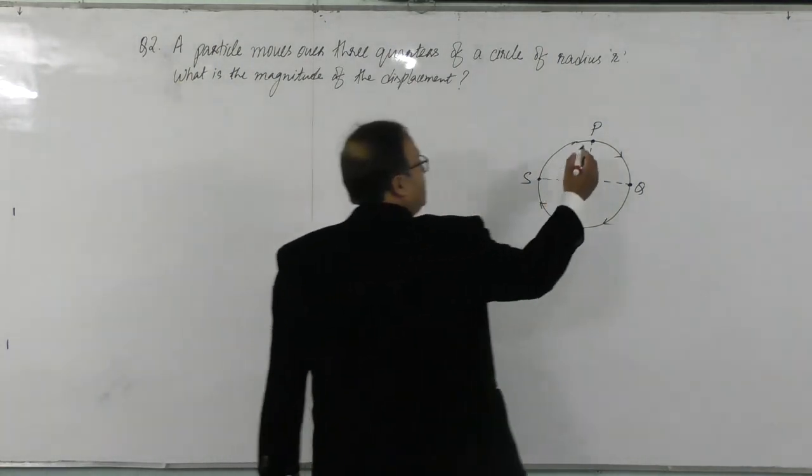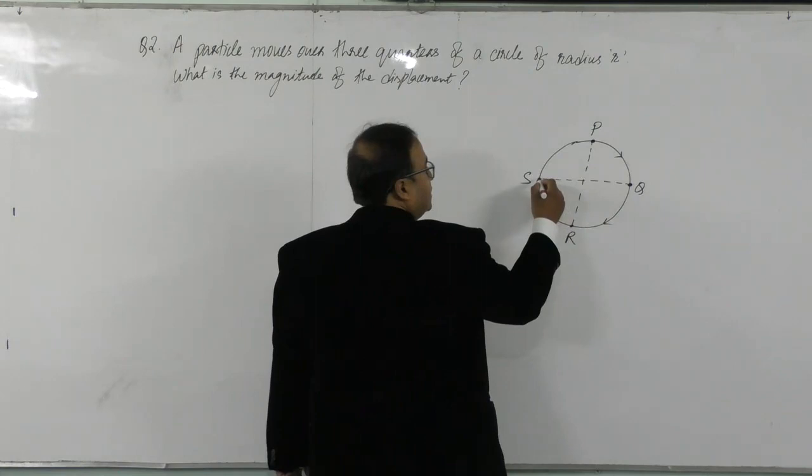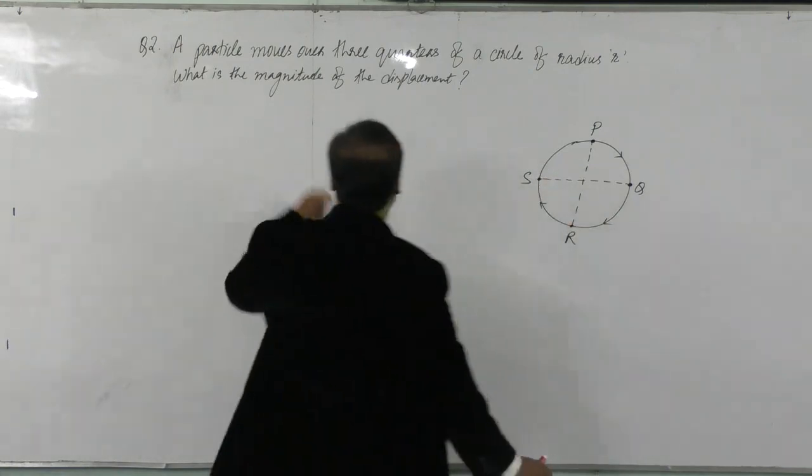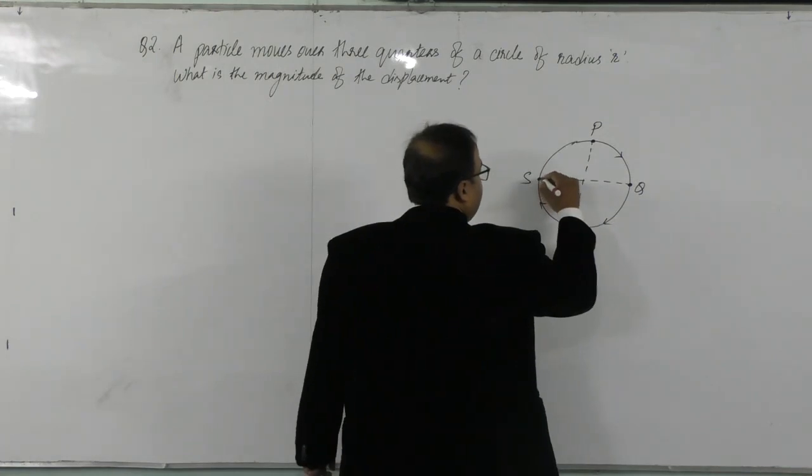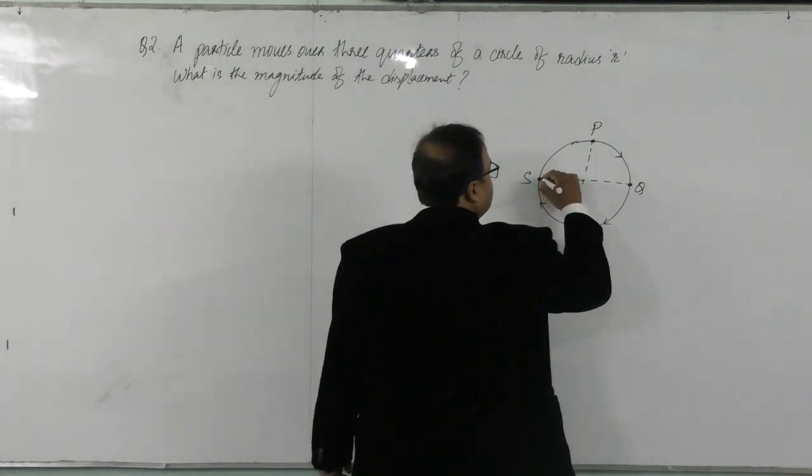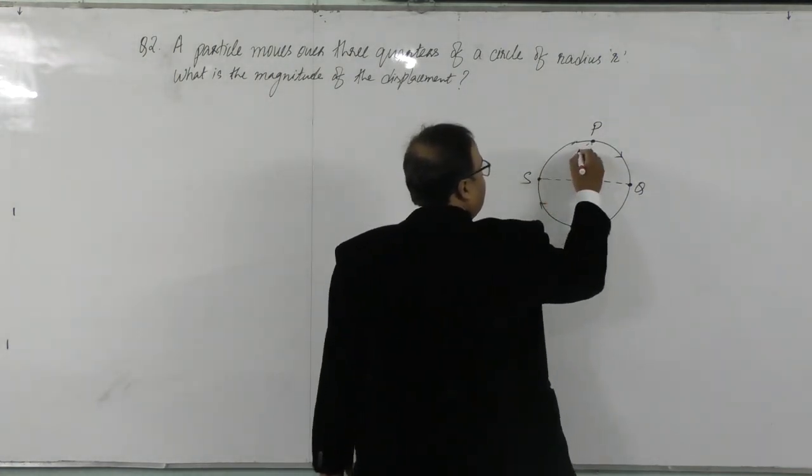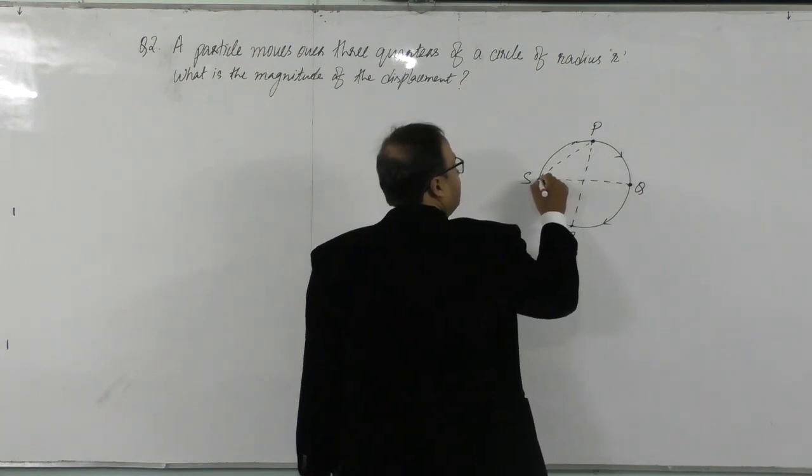So initial position is P and final position is S, or ham loko find out kare na hai displacement. We know that displacement is the shortest straight line path between the initial and the final position.